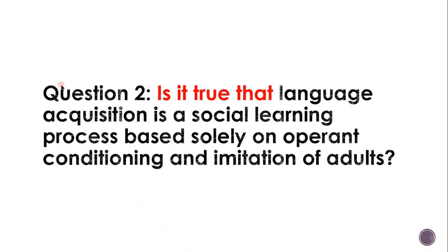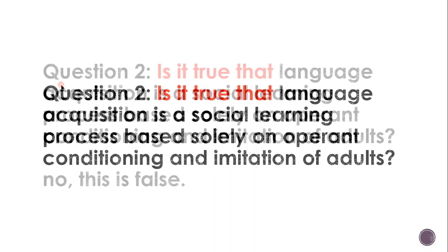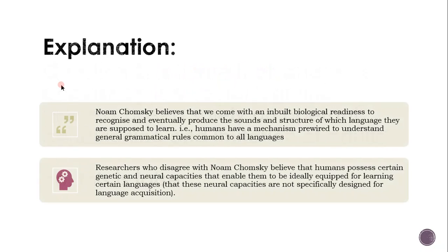Question two. Is it true that language acquisition is a social learning process based solely on operant conditioning and imitation of adults? No, this is false. Noam Chomsky believes that we come with an inbuilt biological readiness to recognise and eventually produce the sounds and structure of whichever language we are supposed to learn — i.e., humans have a mechanism pre-wired to understand general grammatical rules common to all languages. Researchers who disagree with Chomsky believe that humans possess certain genetic and neural capacities that ideally equip them for learning languages, but that these neural capacities are not specifically designed for language acquisition — rather, we have a developed brain that allows us to create language.